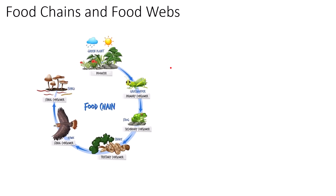Hey guys, Mr. Pete here. This video is all about food chains and food webs. To begin the discussion we need to identify the different parts of a food chain. A food chain consists of a one-way flow of energy from the Sun to the final consumer of that particular food chain. Some food chains can be two organisms, some can be four organisms, some can be six organisms long.